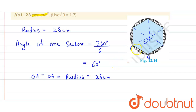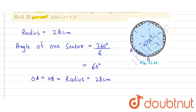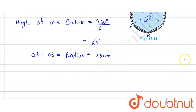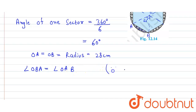We need to find the area of this segment. Since OA equals OB, the angles opposite to these equal sides will also be equal. Therefore angle OBA equals angle OAB, because the angles opposite to equal sides are equal.